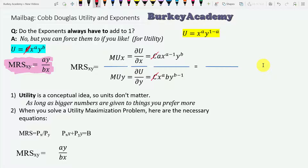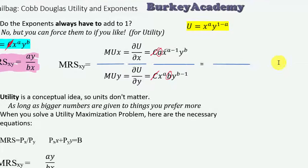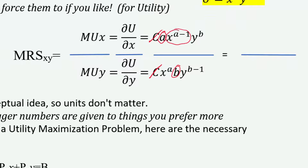We're also going to see that those exponents, we can force them to add up to one. When we simplify the rest, you see the a and the b, and when we simplify x^(a−1) divided by x^a, you just get x to the 1 in the denominator — because it's x to the minus 1. We get a in the numerator and b in the denominator. Similarly, y^b divided by y^(b−1) gives y to the first power. That's where the shortcut rule comes from.